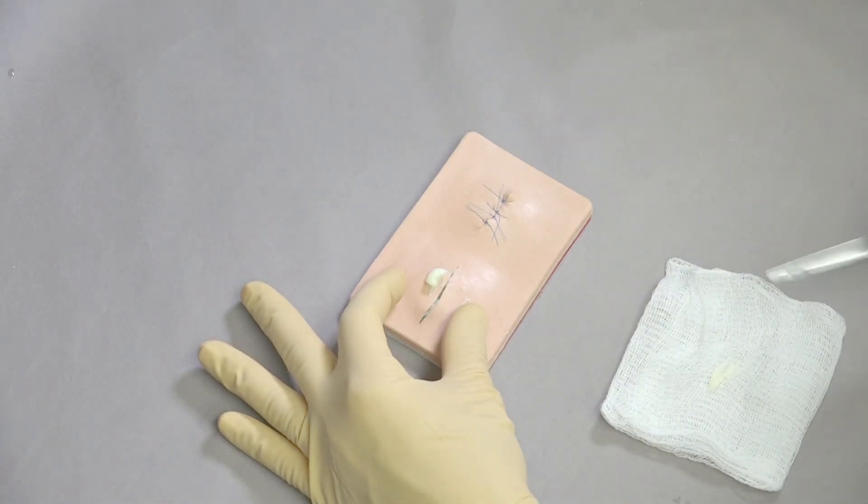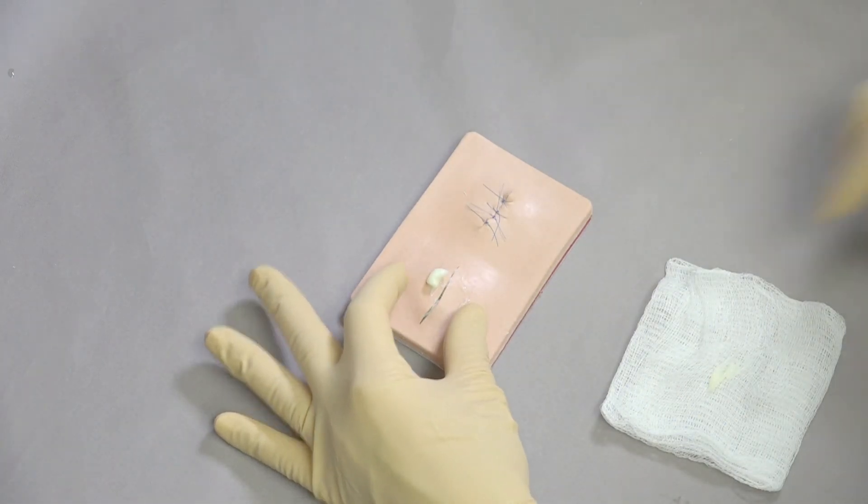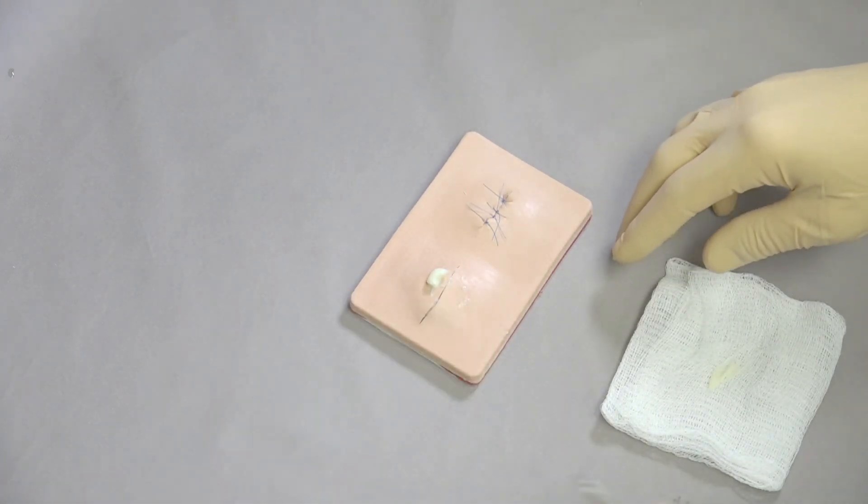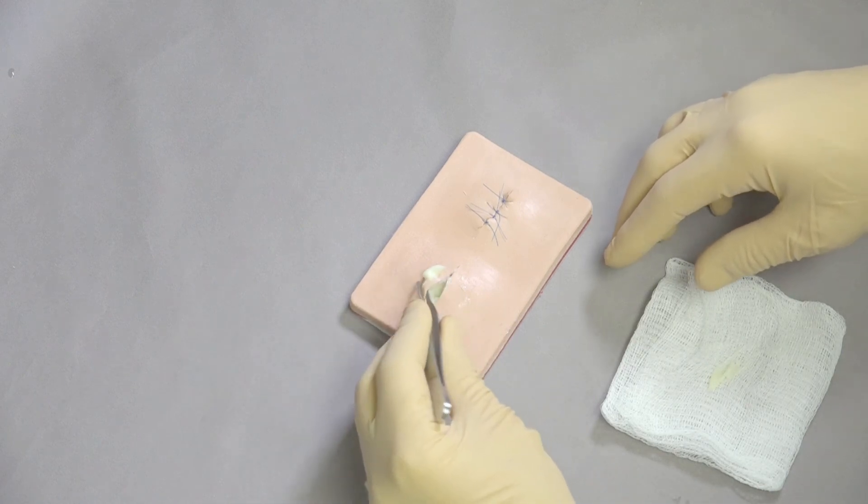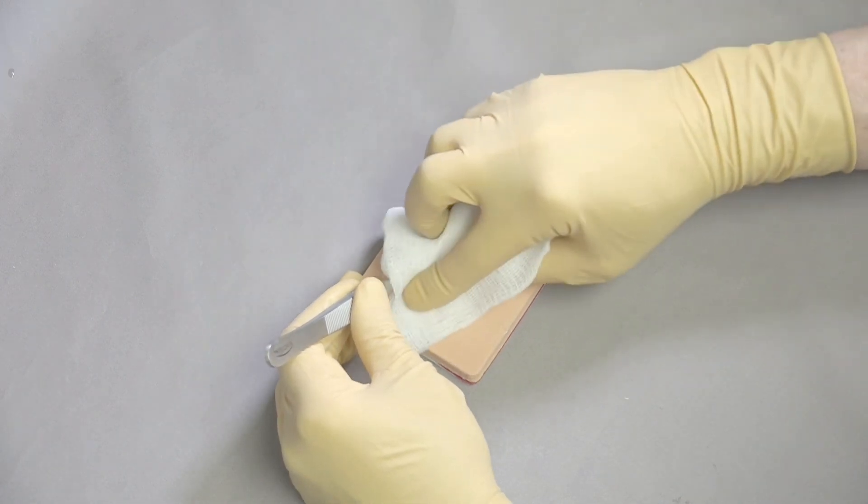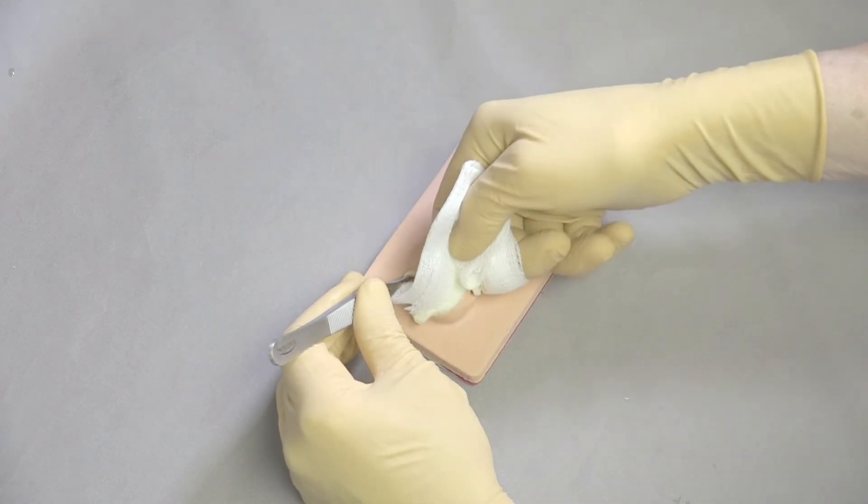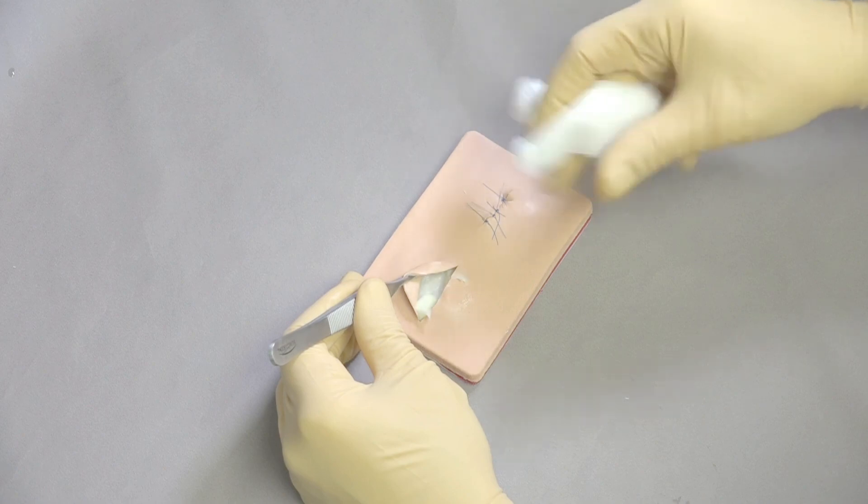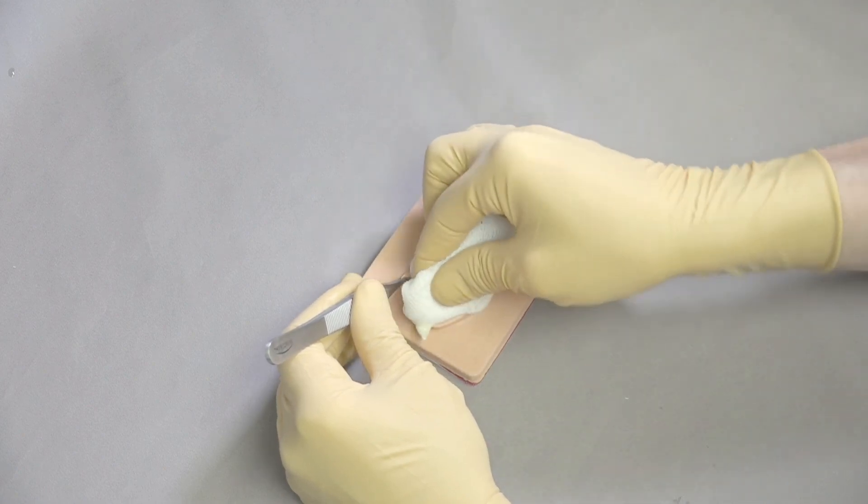Because the most important thing with an abscess is to make sure that we have open things wide so that we can clean it out. So in this case you can appreciate there's all the abscess material within the abscess. And we're going to use then gauze and or lavage to clean that area out.